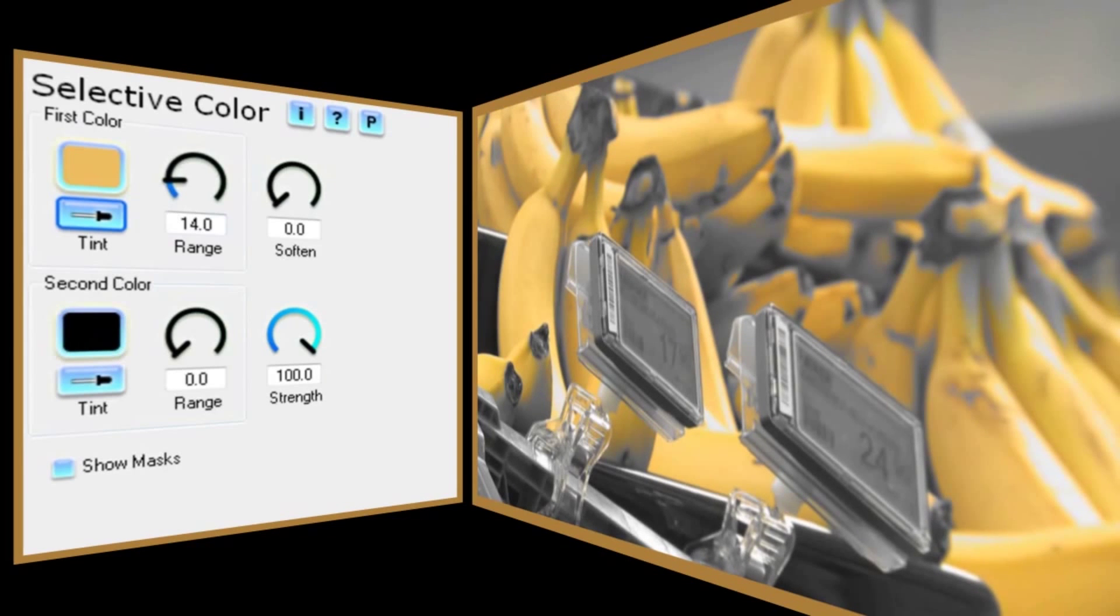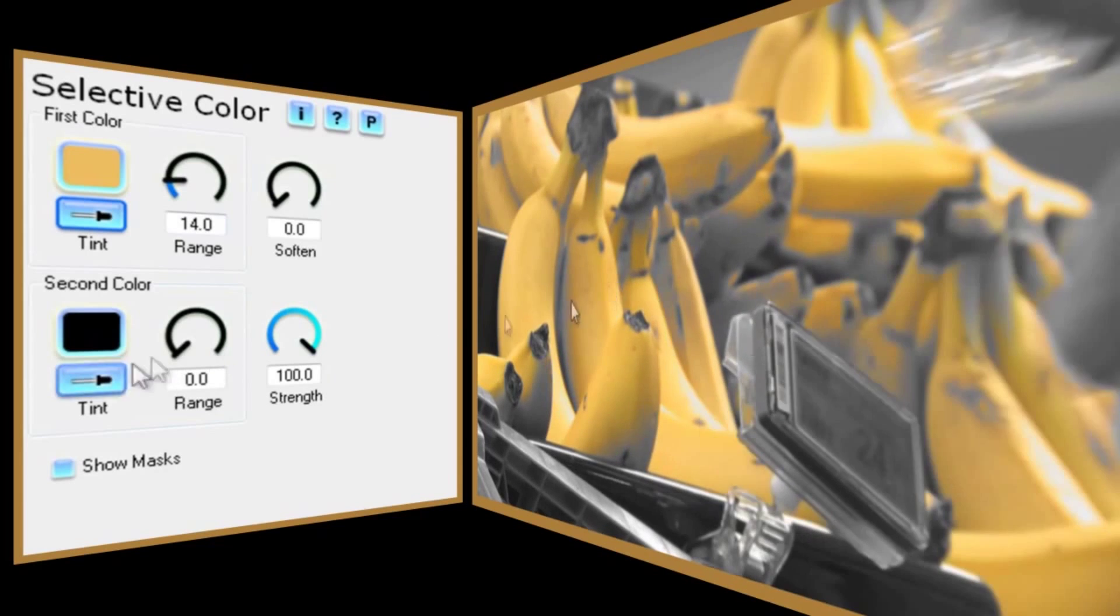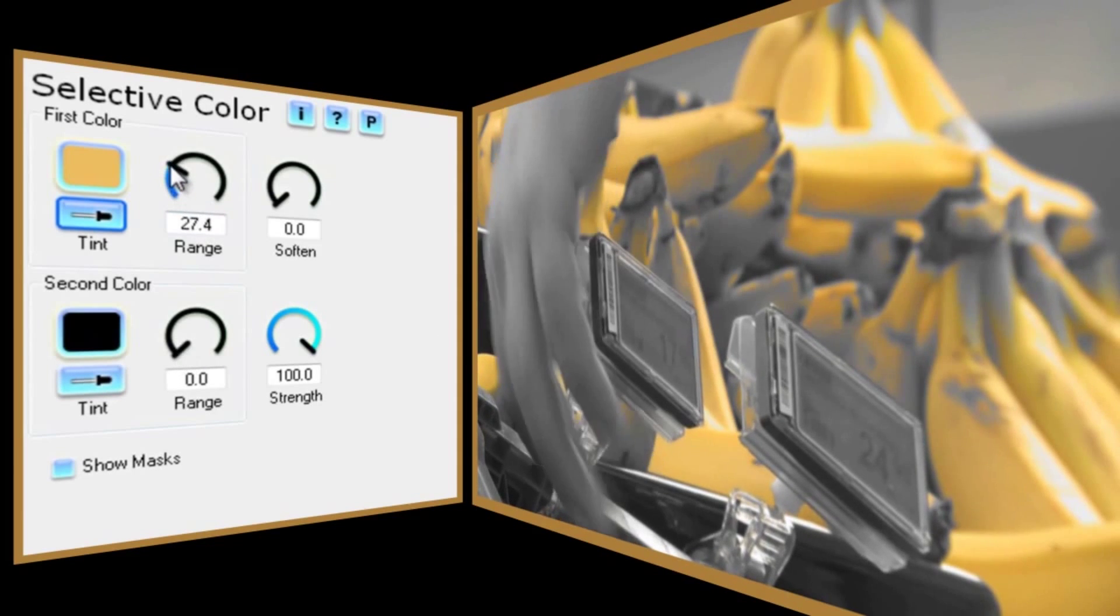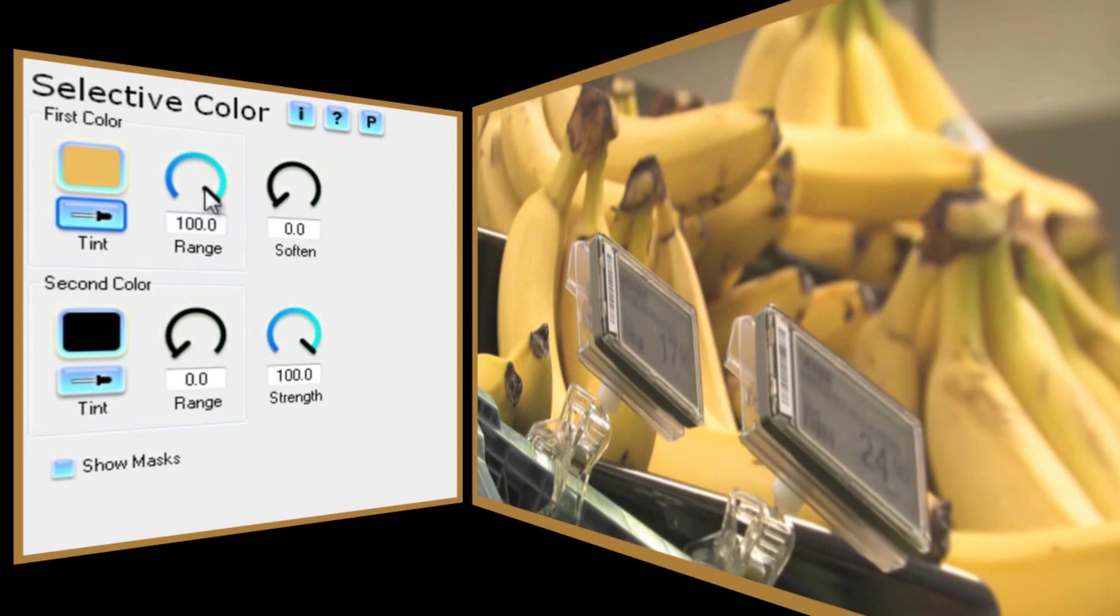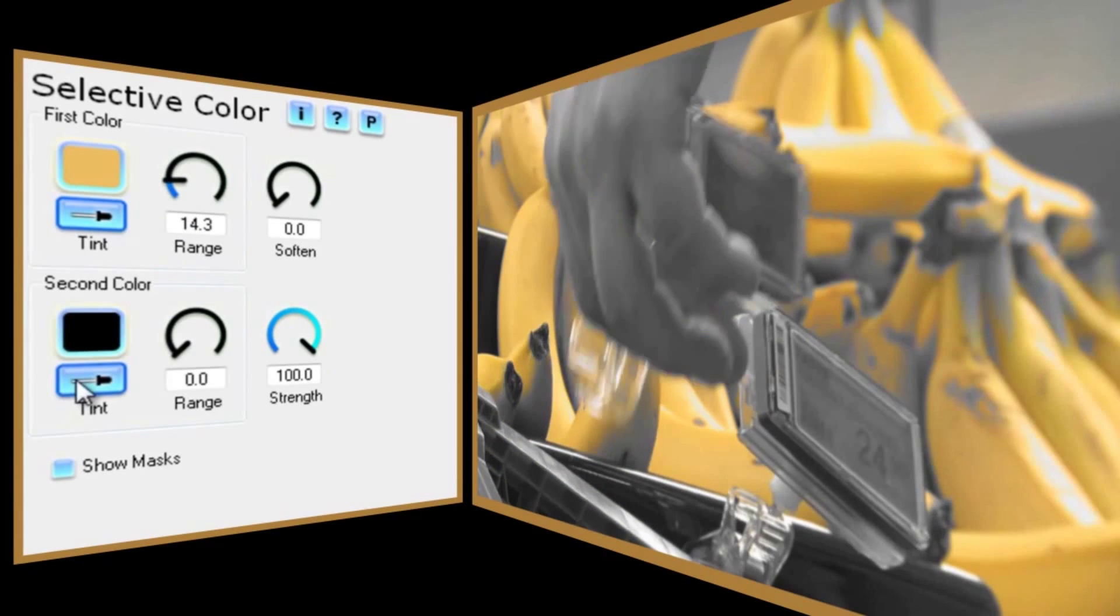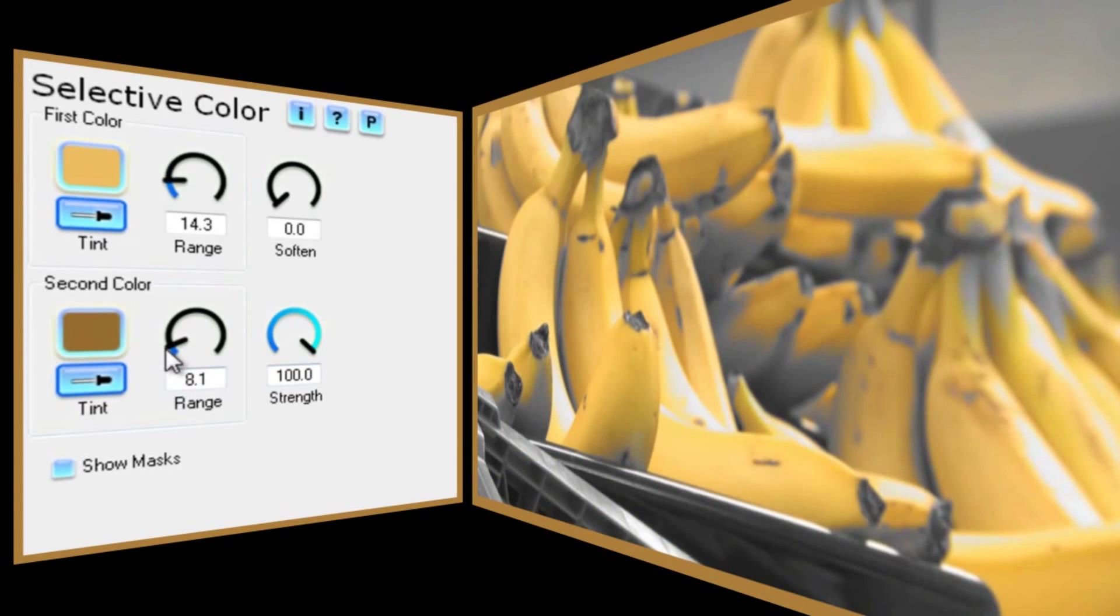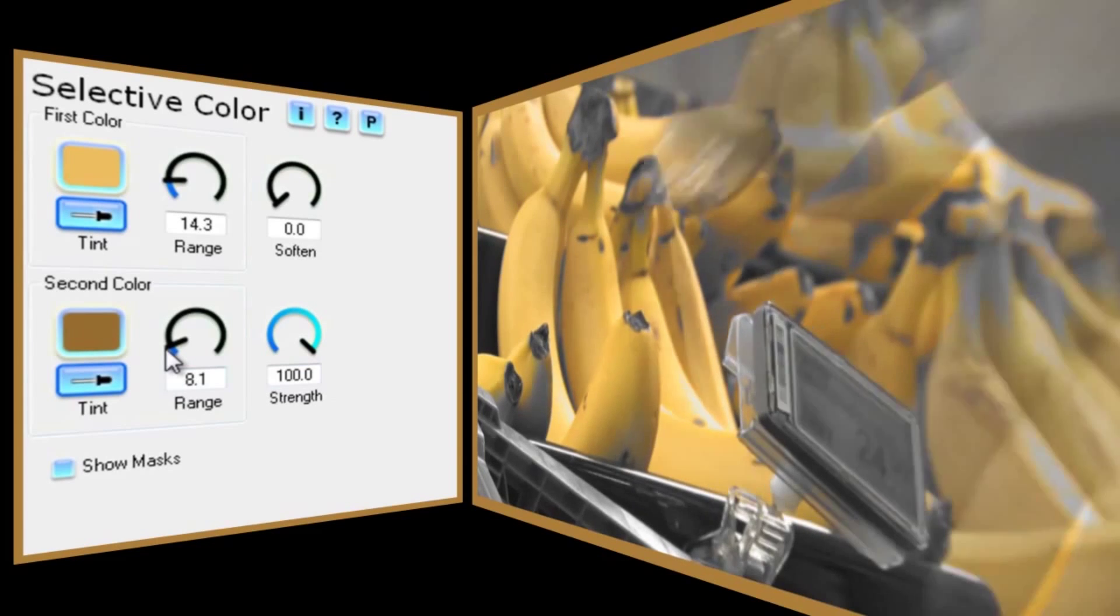There are still a few muddy areas on the bananas though, because of things like shadows. If I raise the range, we start to see other areas showing through which I don't want. So what I can do here is to use the second color picker to select those areas. Raise the range a fraction until just before it reveals the skin coloring and there you go. Much better.